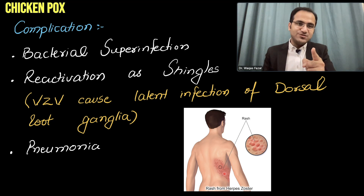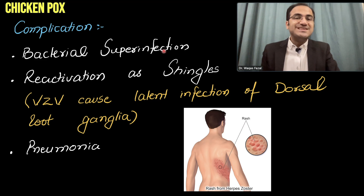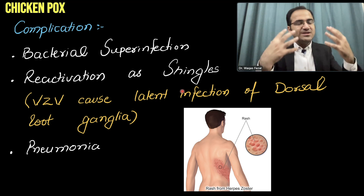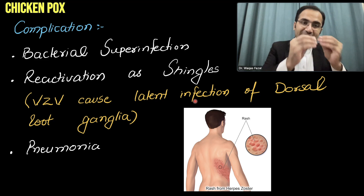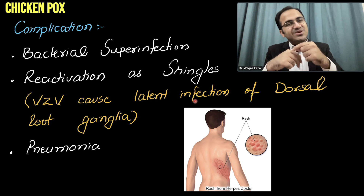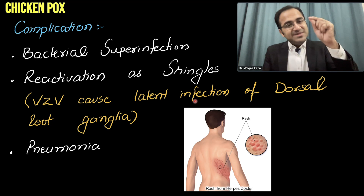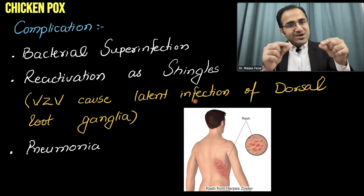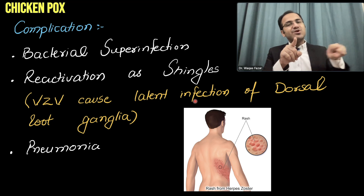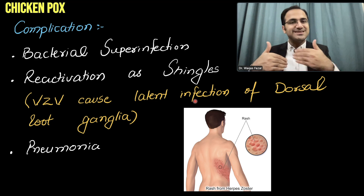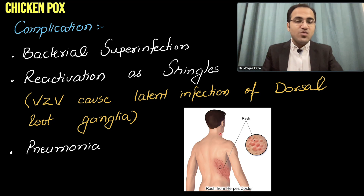That is reactivation of varicella zoster virus, which presents as shingles. The initial infection causes chickenpox with vesicular rash throughout the body. But even after recovery, the virus stays dormant in the dorsal root ganglia. When it reactivates, it affects the specific dermatome corresponding to whichever dorsal root ganglion it was lying in — dermatomal distribution, never crossing the midline, with severe stabbing pain and vesicular rash after many years.